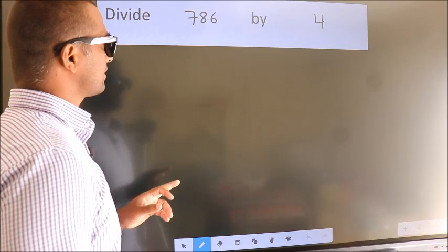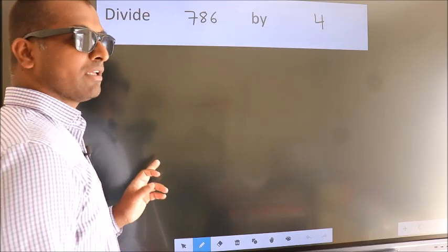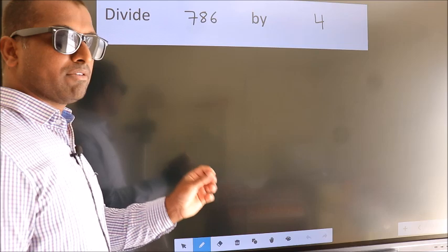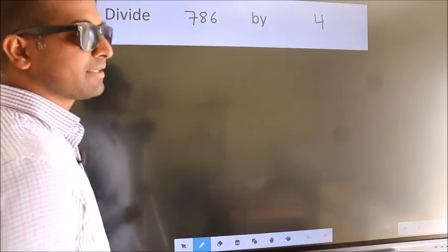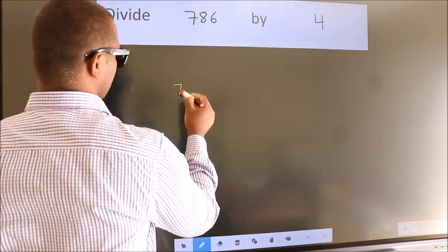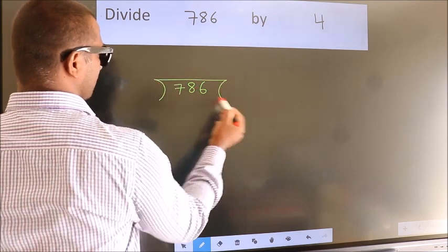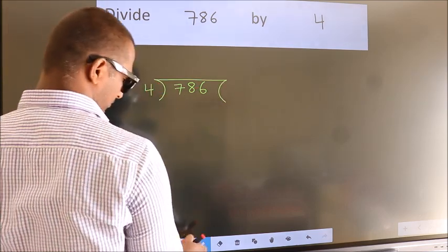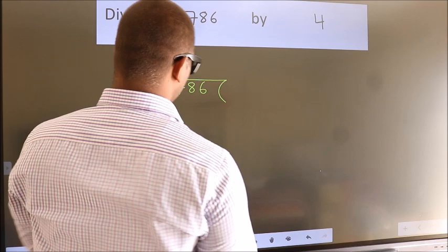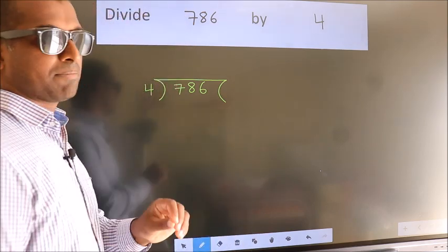Divide 786 by 4. To do this division, we should frame it in this way. 786 here, 4 here. This is your step 1.